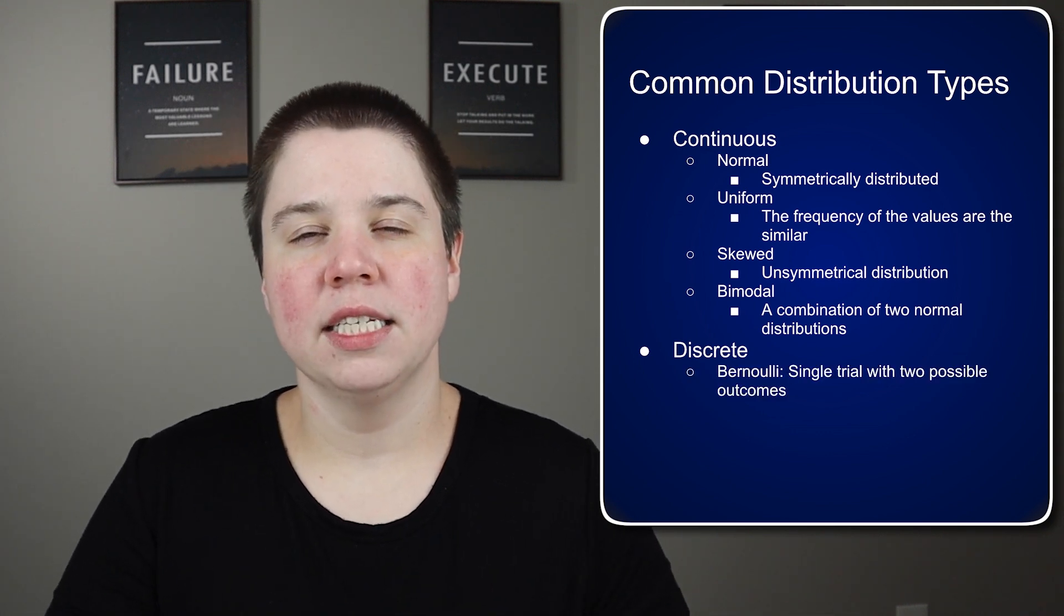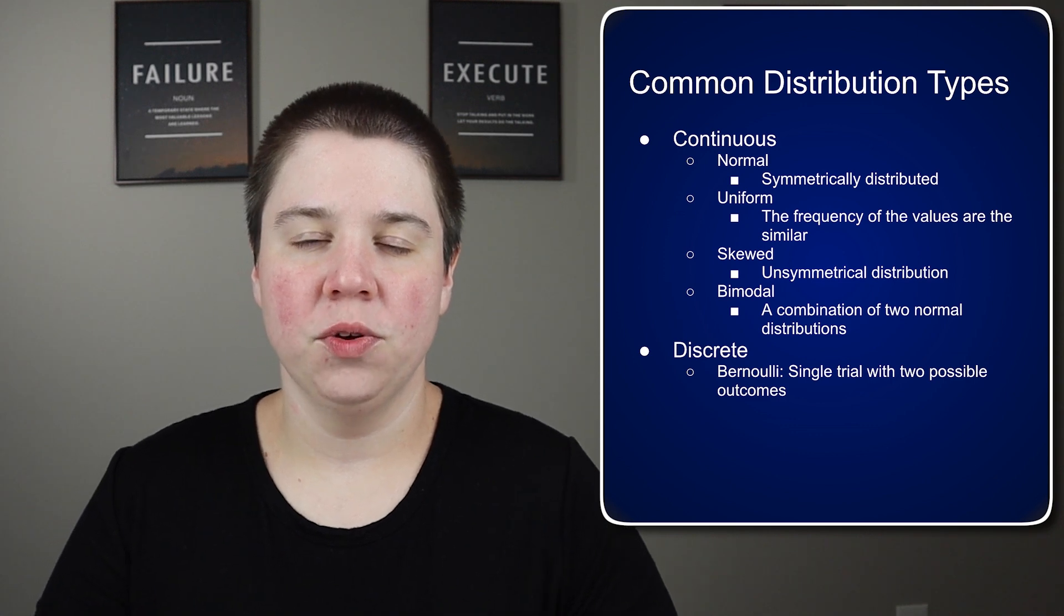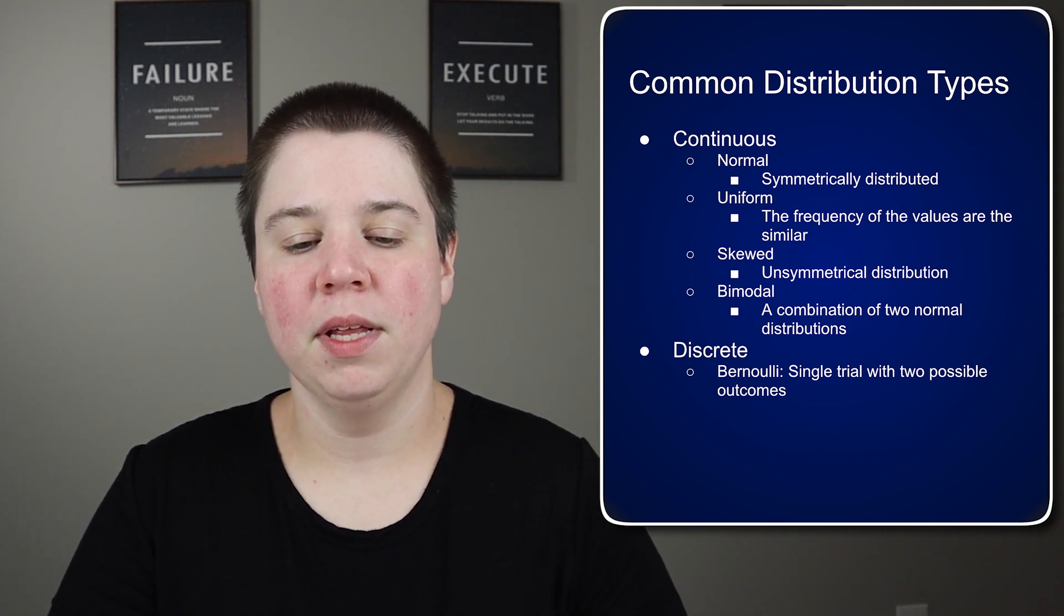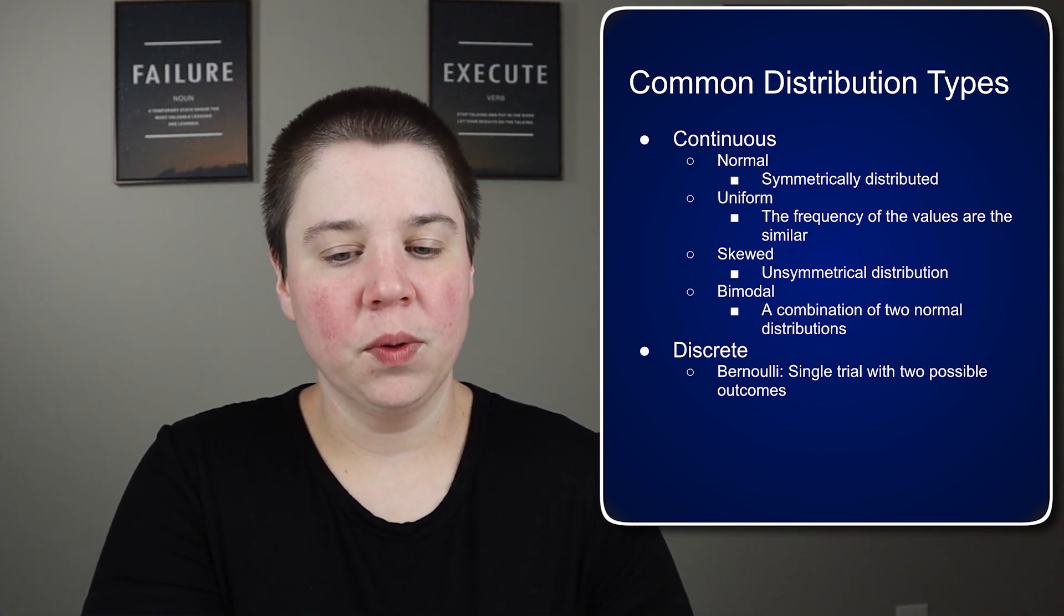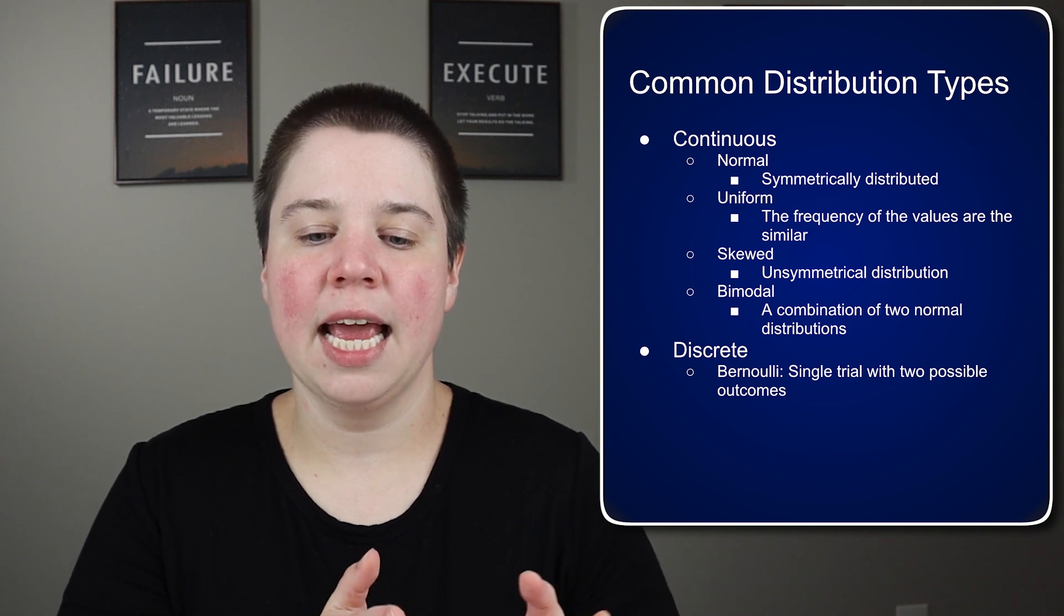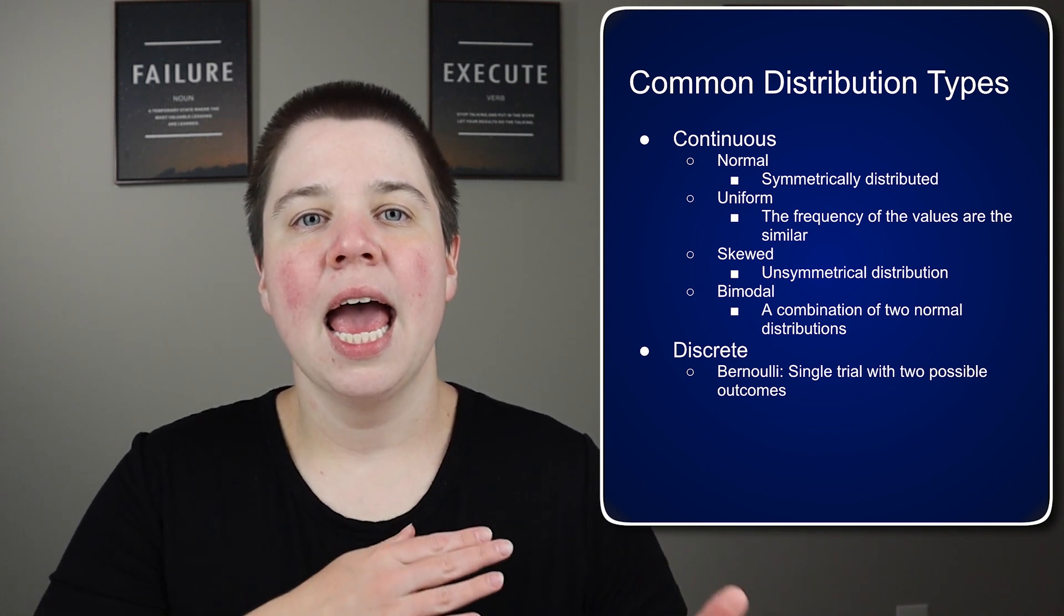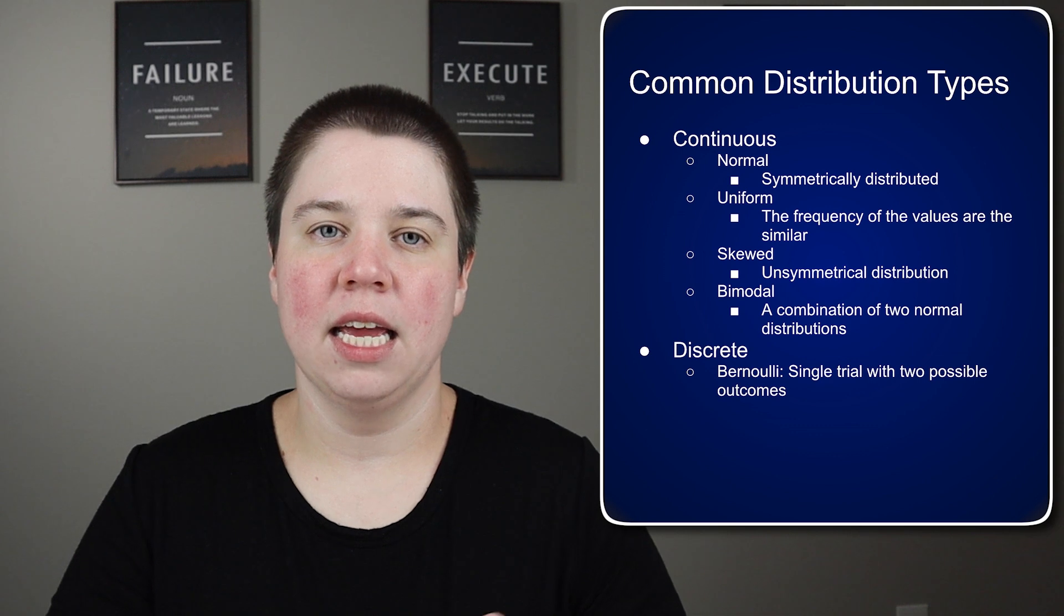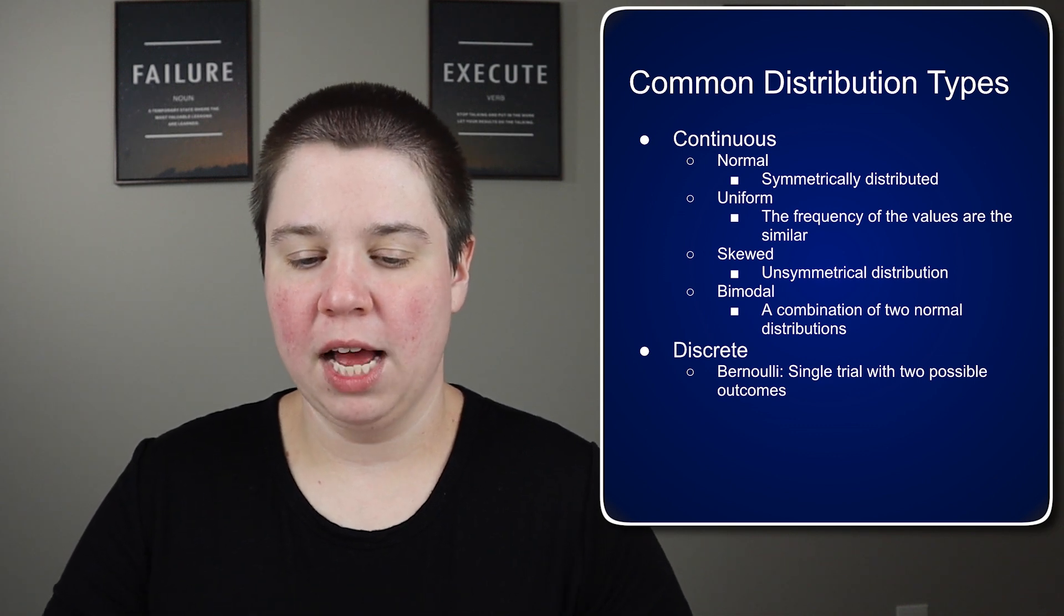A couple different distributions that are used specifically within probabilities is first the Bernoulli distribution. This is a single trial with two possible outcomes, and essentially you see the frequency between both of those possible outcomes.